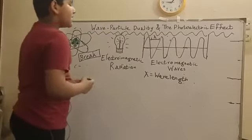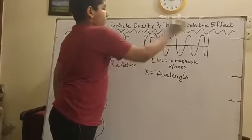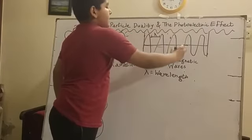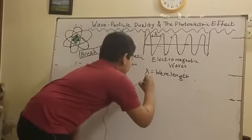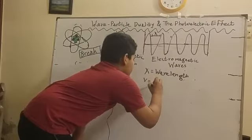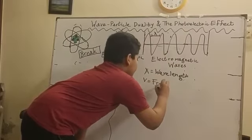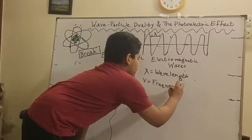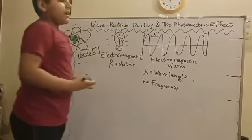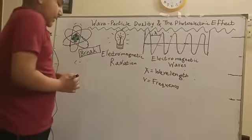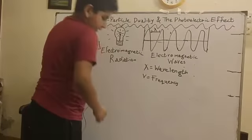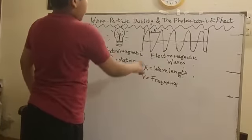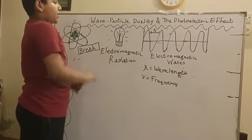Now, how frequent the wave moves is called a frequency, which is measured by values like Hertz or gigahertz. These are inversely proportional to each other—if one goes up, the other goes down.